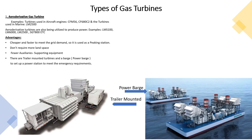What are the types of gas turbines? There are two types. The first one is the aero-derivative gas turbine. Aero-derivative gas turbines are used in aircraft engines. Examples include the CFM-56 and the CF-6-80C2.